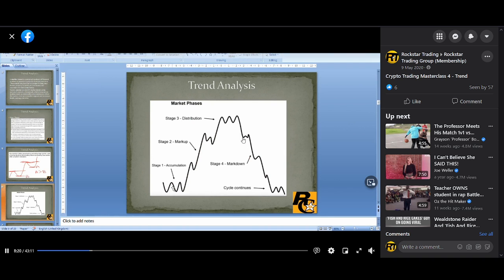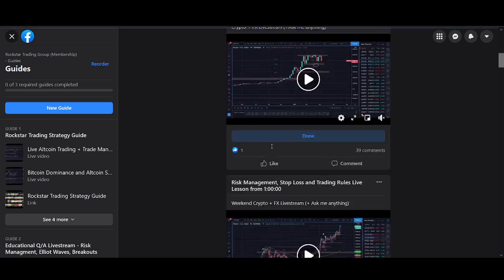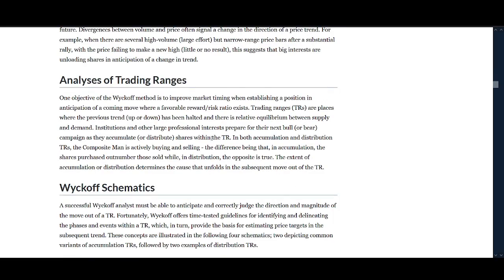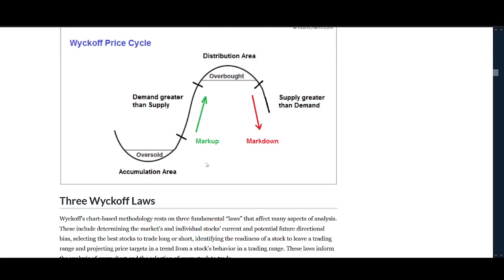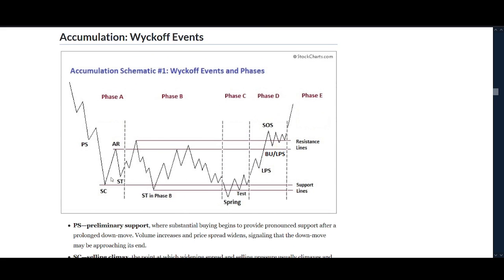I want to see higher highs creating higher lows and pushing higher — accumulation, markup, accumulation, markup, distribution, markdown. What we don't want to see is more distribution and a break below 30k. If that happens, using trend analysis and Wyckoff, this is bearish. What we're looking for now is Bitcoin re-accumulating. When trend is down the market just makes a high, a low, and breaks down. What we want to see is the market move up and then not break to a new low.